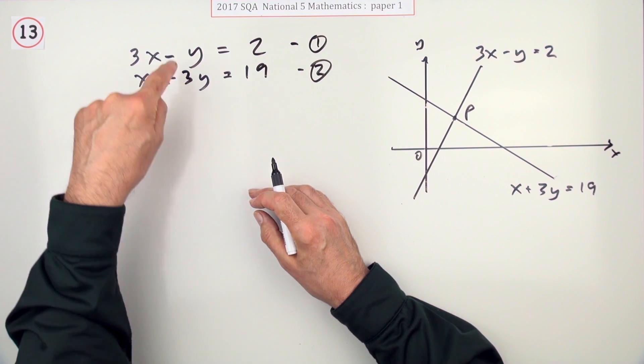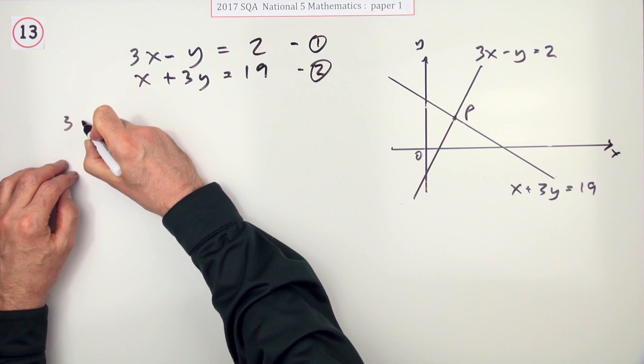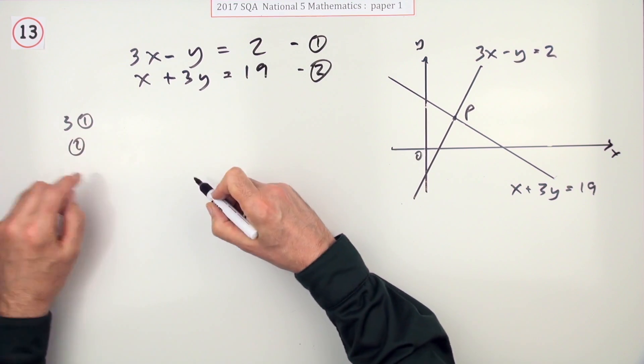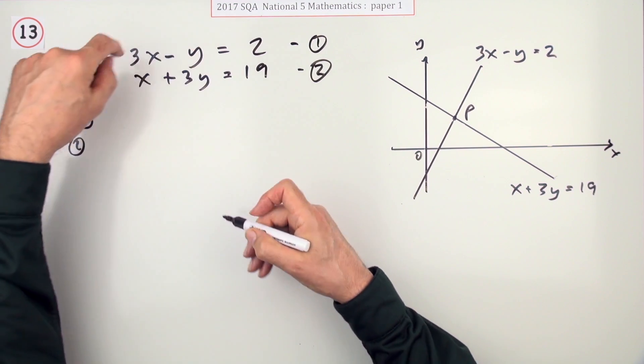My plan will be if I do 3 of this one, 3 of equation 1, I'll just put it to the side here. If I do 3 of equation 1 and 1 of equation 2, it should all match up nicely. So 3 of this means 3 times everything, not just the bit you want.